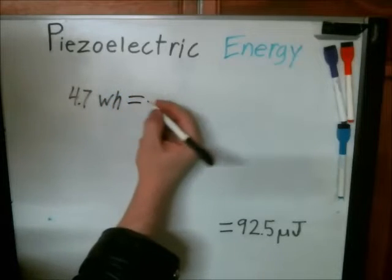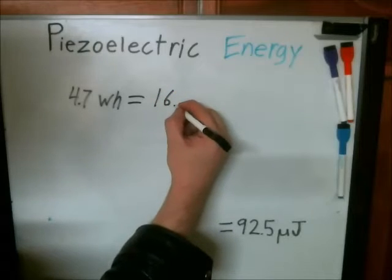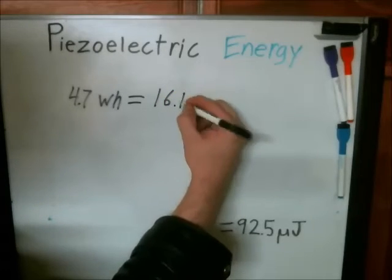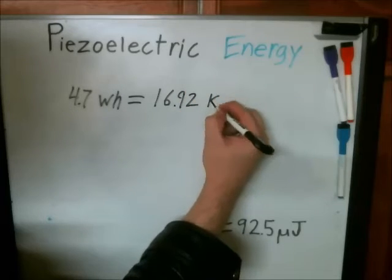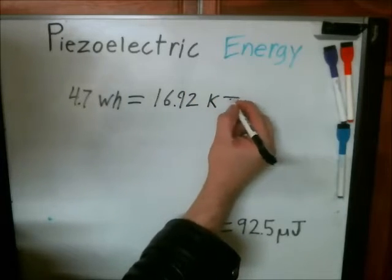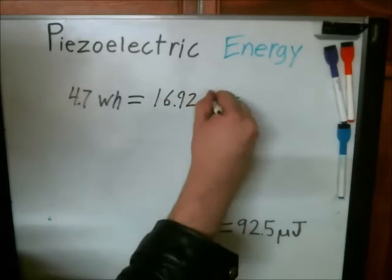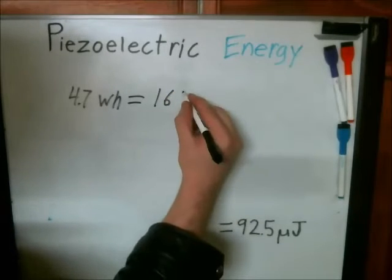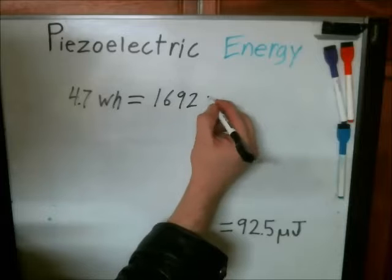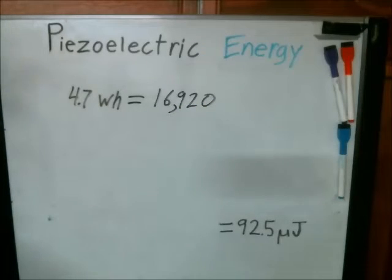which is the equivalent of 16.92 kilojoules. So kilojoules is 1,000 joules, so this would be 16,920 joules. Meanwhile,